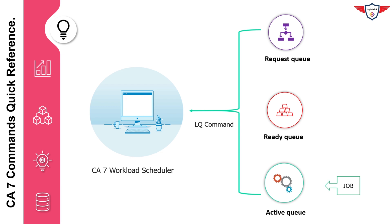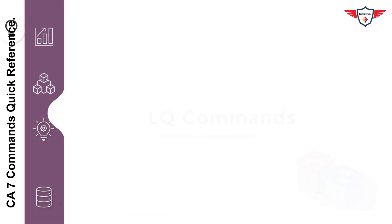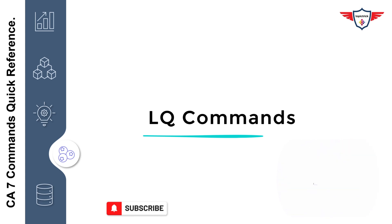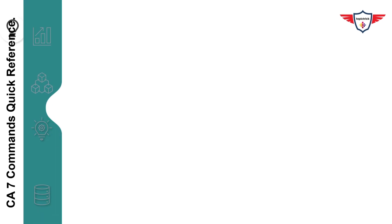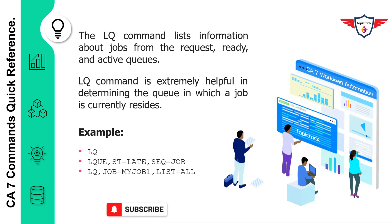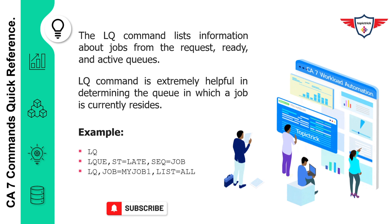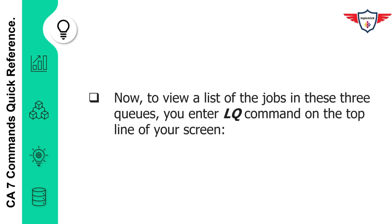In order to view the status of a job residing in these queues, you need to know the CA7 LQ command. The CA7 LQ command lists information about jobs from the request queue, ready queue, and active queue. It is extremely helpful in determining the queue in which a job is currently residing. The syntax is simple: type LQ followed by a couple of parameters on the CA7 screen and hit enter. It will then display all information related to that job and where exactly it is residing.